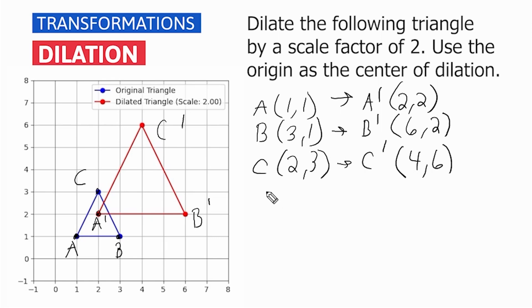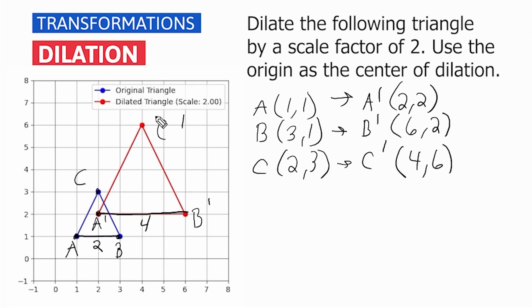Now, other things to point out about dilating the figure on the coordinate plane: all one-dimensional measures are going to increase by the given scale factor. For example, if we take a look at the original triangle's base, it is a length of 2, and the new base is a length of 4 — so the length of the base doubled. If we take a look at the height of the triangle, which is 2, it doubled and became a height of 4. So all corresponding sides and all dimensions — whether the base or the height — will increase by a scale factor of 2.